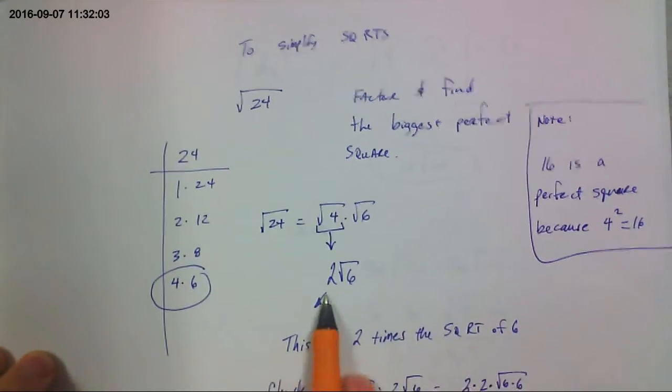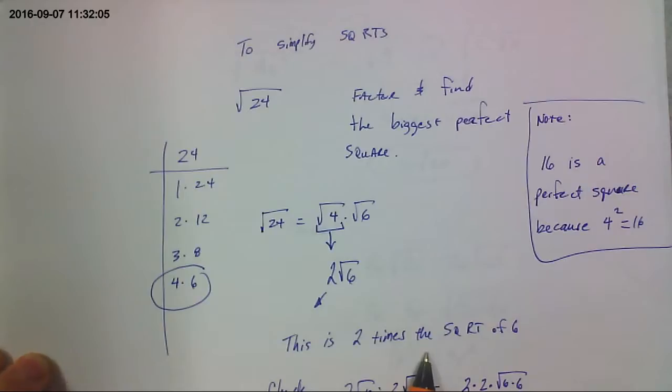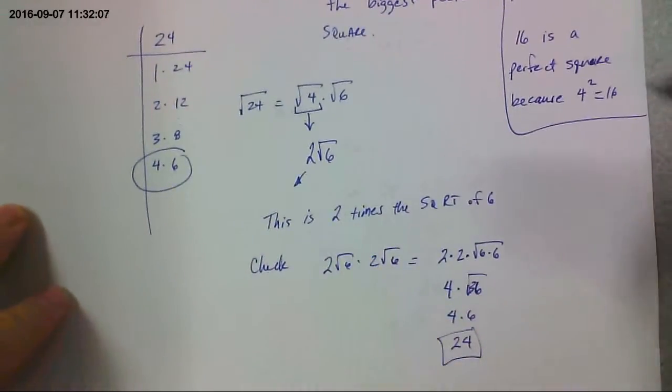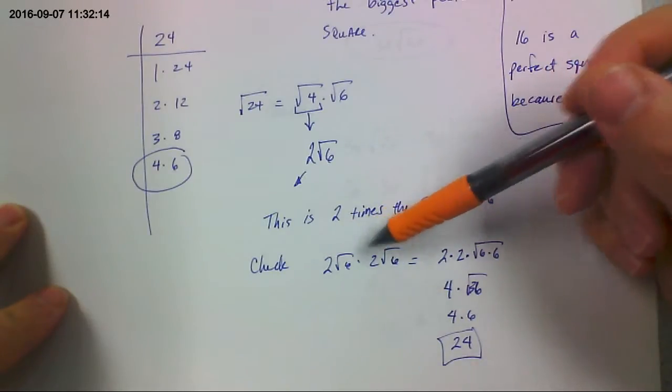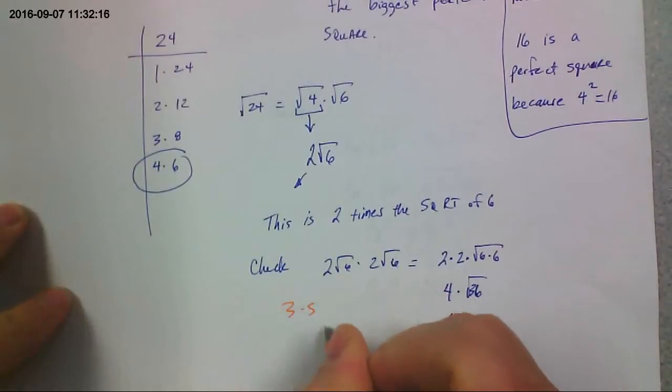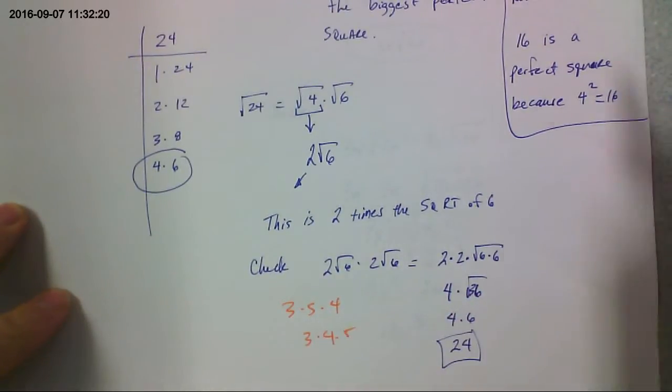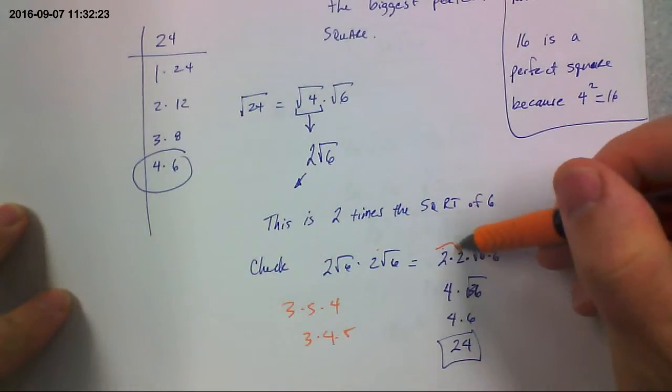So anyway, this right here really means 2 times the square root of 6. If I wanted to check to see if this was right, I would take my answer and square it. 2 times the square root of 6 squared times 2 times the square root of 6. So you can change the order when you multiply. 3 times 5 times 4 is the same as 3 times 4 times 5.